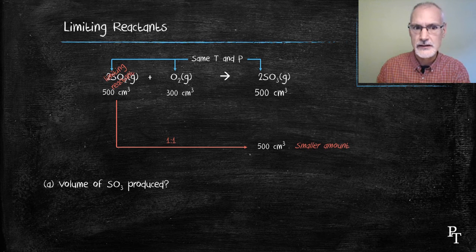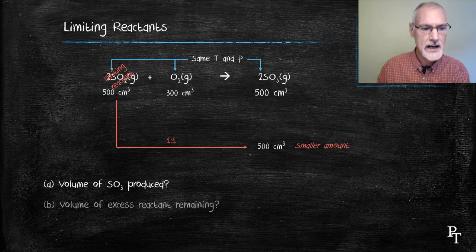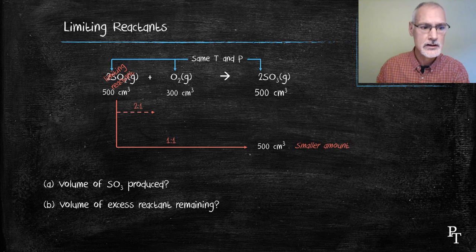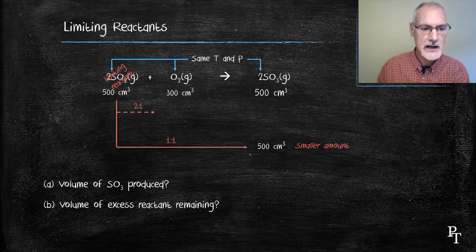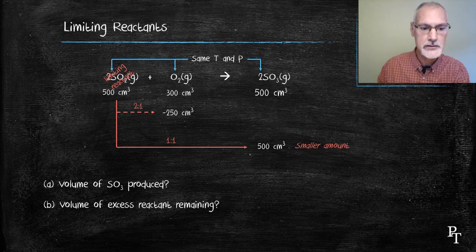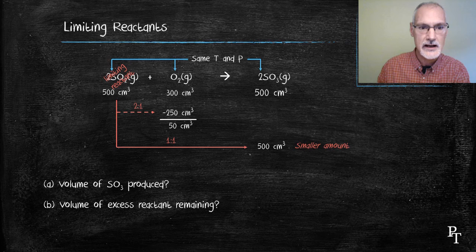Now how much of the oxygen is left over? So again I go back to my limiting reactant and notice that there exists a two to one ratio between the sulfur dioxide and oxygen. Hence if I have 500 I would require 250 a two to one ratio. So I had 300, 250 were used leaving me 50 remaining.